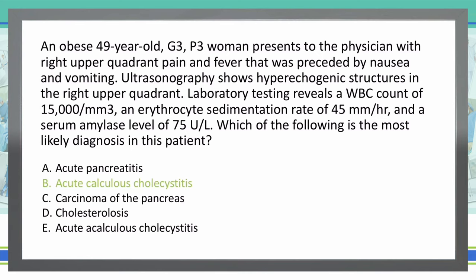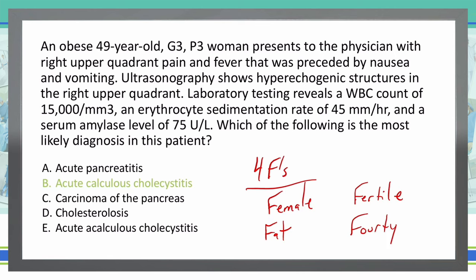Don't forget our Four F's associated with risk factors for acute calculous cholecystitis: Female, Fat, Fertile, and Forty. This patient — a 49-year-old female who is fertile, has had multiple children, and is obese — fits classically into the acute calculous cholecystitis diagnosis.